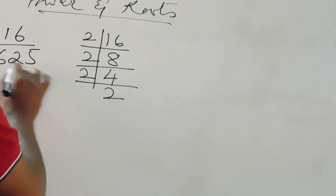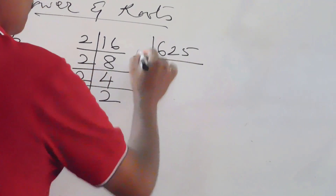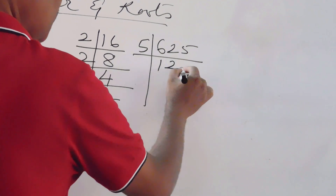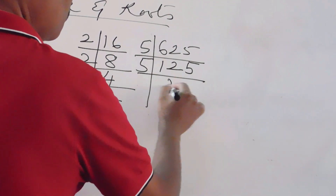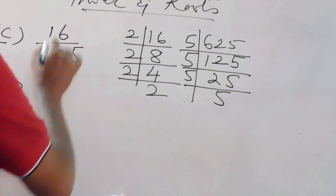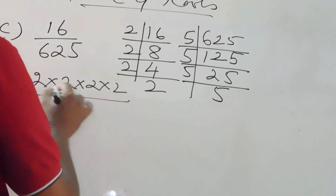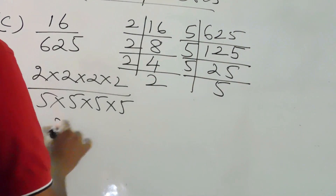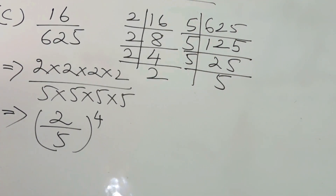Now children, question number C: 625. Factorize 625 by dividing by 5. You can write the factors: 5 into 5 into 5 into 5. Also the related fraction has 2 into 2 into 2 into 2 on top and 5 into 5 into 5 into 5 below. Converting to exponential form with base 2 by 5, put inside the bracket to the power 4.